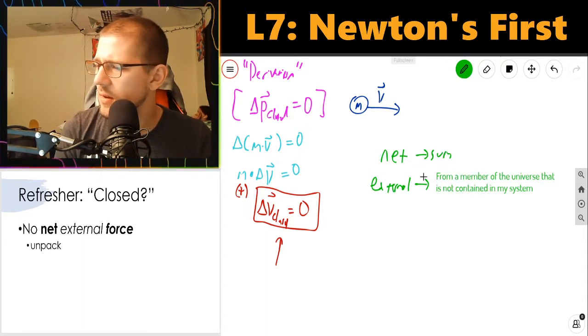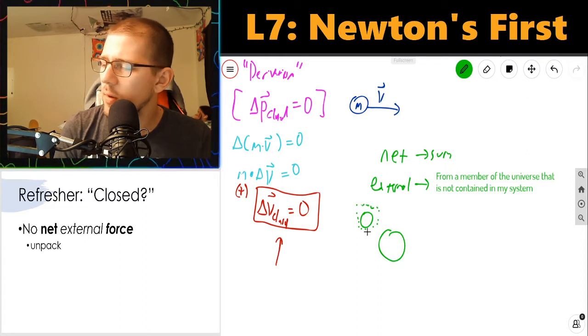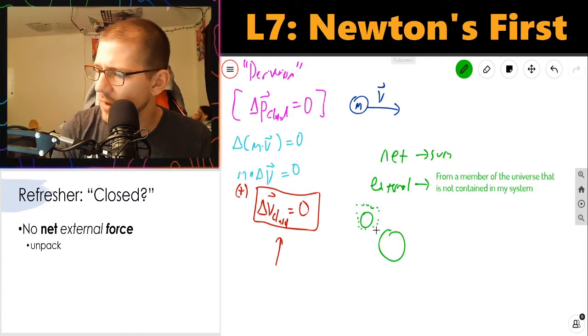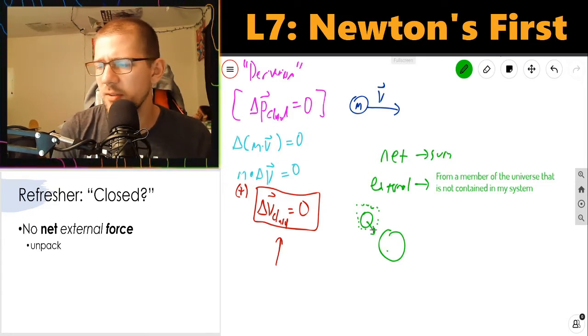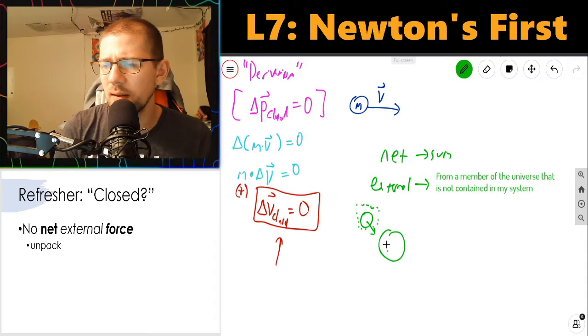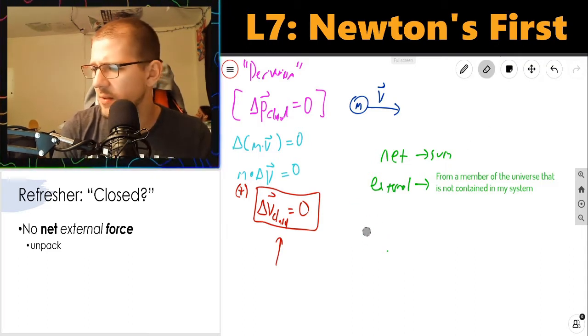If I treat the moon as my system, and here's the earth, well then there is an external force on this moon because there is a force coming from the earth. It's generating a gravitational force on the moon. So that represents an external force. It's coming from an entity that is not enclosed in my system. That's what external means.